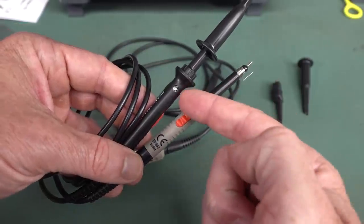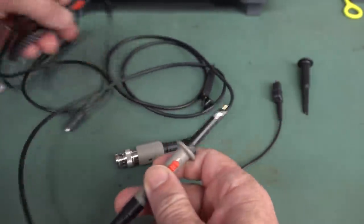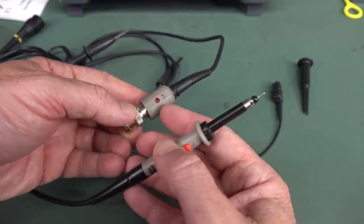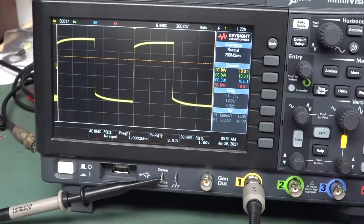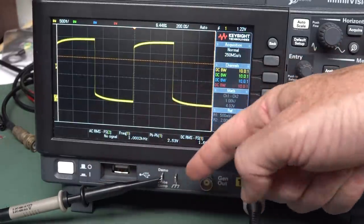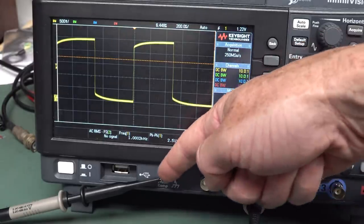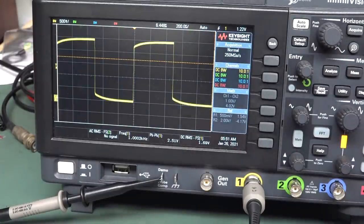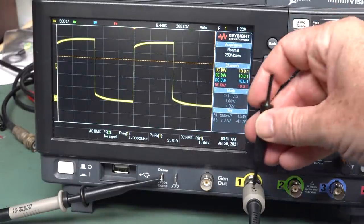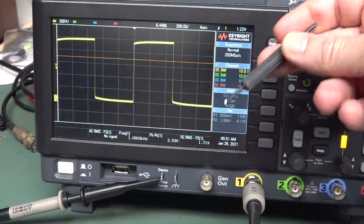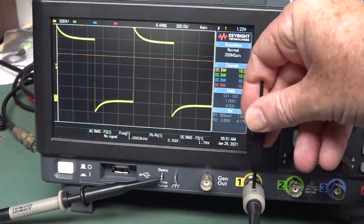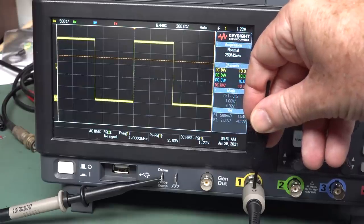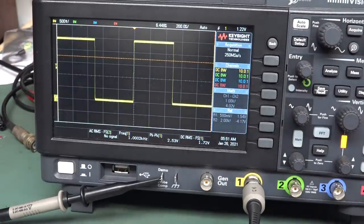And for all these types of passive probes, you want to compensate them. And you do that by hooking up your probe in x10 mode. Doesn't do anything in x1. Hook it up to your compensation output, which just generates a 1 kilohertz square wave. And then you use the adjustment tool provided, which is a non-conductive one. You don't want to use a conductive one. And hold your tongue at the right angle. And you trim that until you get a nice, beautiful, even square wave like that. Good enough for Australia.